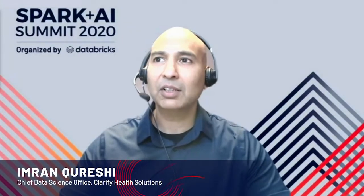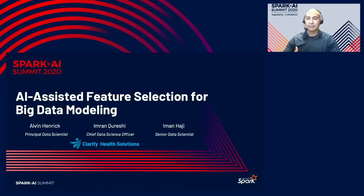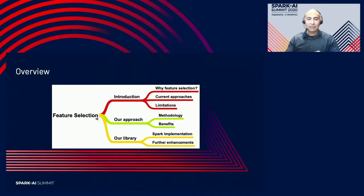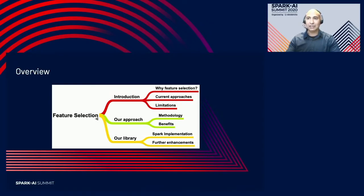Hi folks, I'm Imran and I'll be talking to you together with my teammates Alvin and Iman about how to do AI-assisted feature selection in Spark. Be sure to give us feedback — we would love to hear from you. I'm going to walk you through the introduction: why you should do feature selection, what the current approaches and limitations are, and how our approach is different. Then I'll hand it over to Alvin for more details, and lastly we'll talk about our open source library.